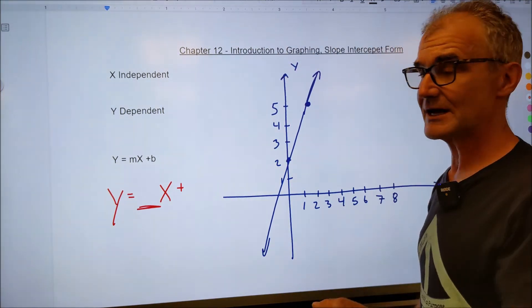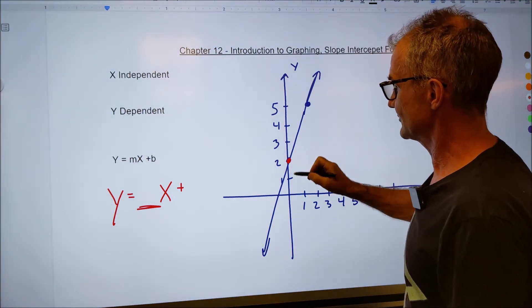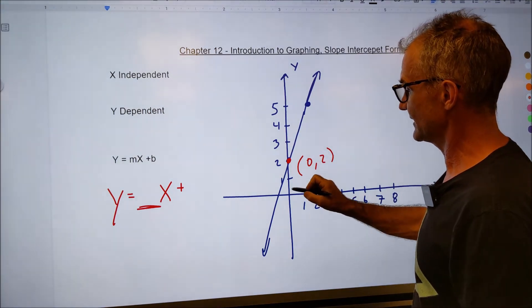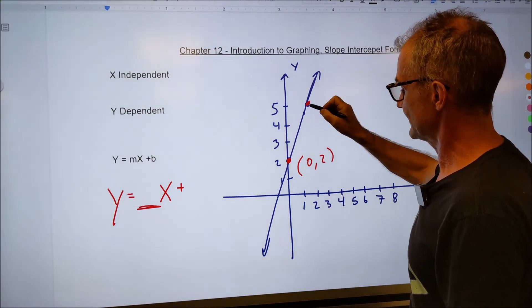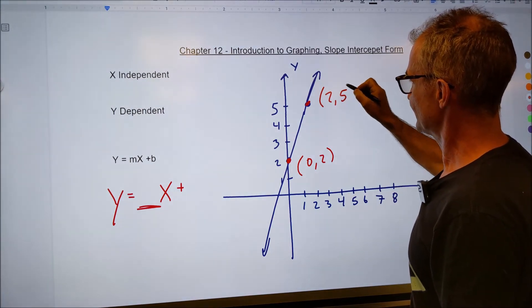Remember, m is rise over run. So I'm just going to pick any two points on the line. Here's one ordered pair. This point is over zero up two. That's my x, my y. And then here's another point. This value is over two up five.